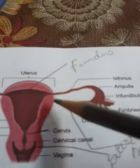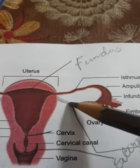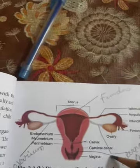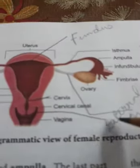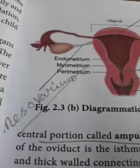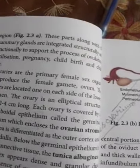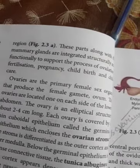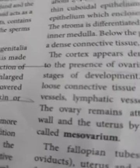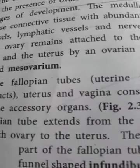The ovary remains attached to the abdominal cavity with the help of a ligament-like structure. The specific term used is mesovarium — the ovary is attached to the pelvic wall and the uterus by an ovarian ligament called the mesovarium.